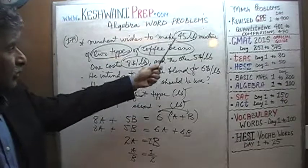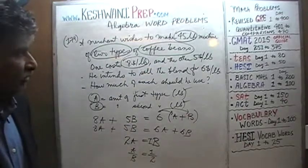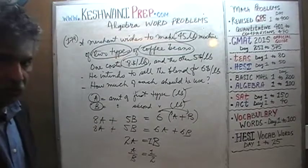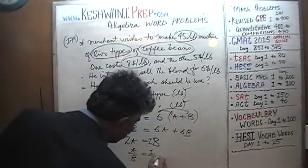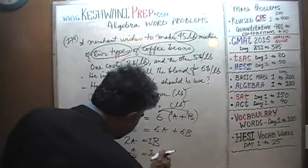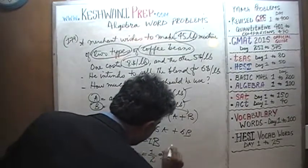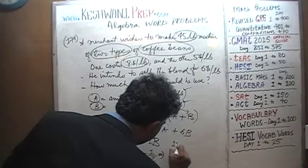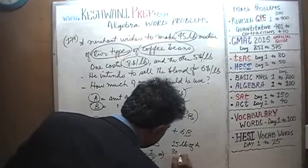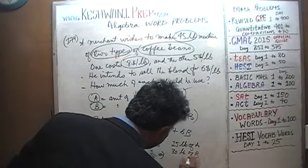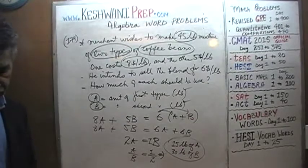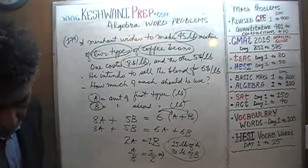We have a total of 45 pounds and the beans must be mixed in a ratio of 1 to 2. This makes it quite easy. Since 1 + 2 = 3 parts and 45 ÷ 3 = 15, we need 15 pounds of type A and 30 pounds of type B.